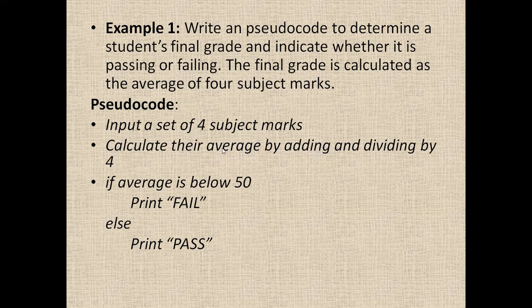After getting the average, you need to check whether it is below 50. If it is below 50, display that the student has failed. Otherwise, print that the student has passed. With the help of these three statements, you will get an idea about the logic of this program. So this pseudocode contains only these three statements.